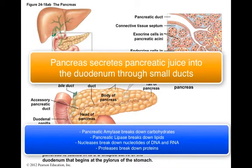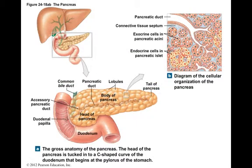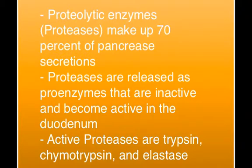Pancreatic amylase breaks down carbohydrates, pancreatic lipase breaks down lipids, nucleases break down nucleic acids from DNA and RNA, and proteolytic enzymes such as proteases and peptidases break apart the peptide bonds of proteins and polypeptides. These proteolytic enzymes account for 70% of the enzyme production of the pancreas. These enzymes are secreted from the pancreas as proenzymes and are inactive when secreted, which helps protect the wall of the pancreas; they become active once in the duodenum.